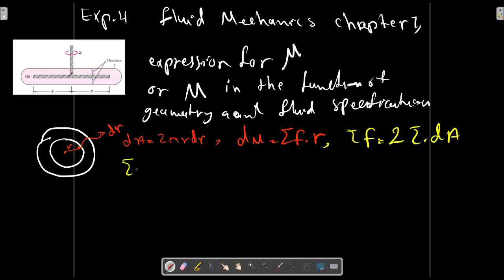Tau equals, in the rotated disk, we have μ omega r over h. h is the thickness.